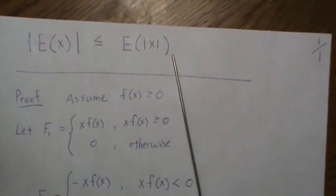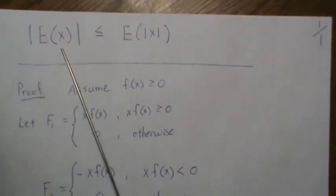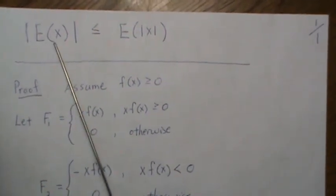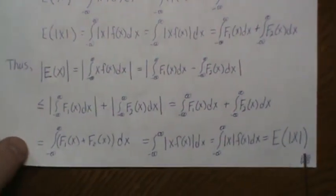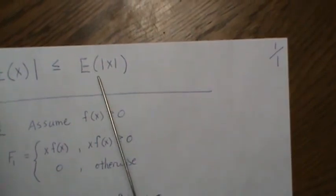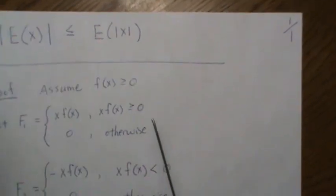One other note: I used X here, but it could really be a function of X. So expected value of g of x, and you can use the same argument to show that the expected value of absolute value of g of x follows the same inequality.